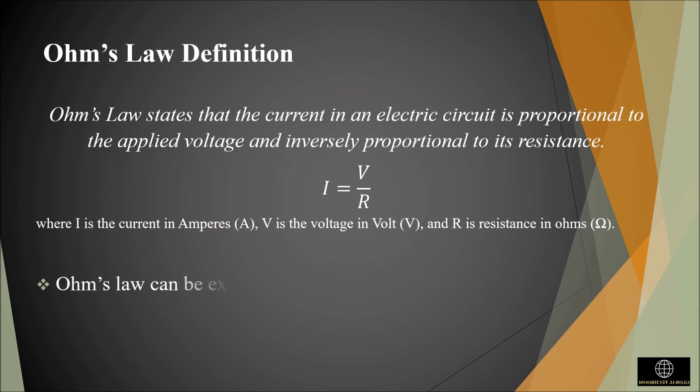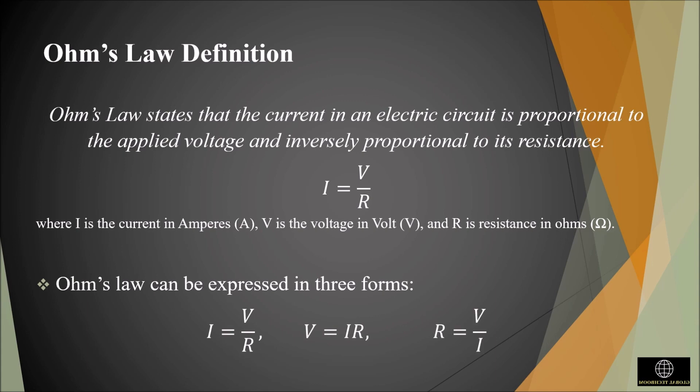Ohm's law can be expressed in three forms: I is equal to V by R, V is equal to I times R, and R is equal to V by I.